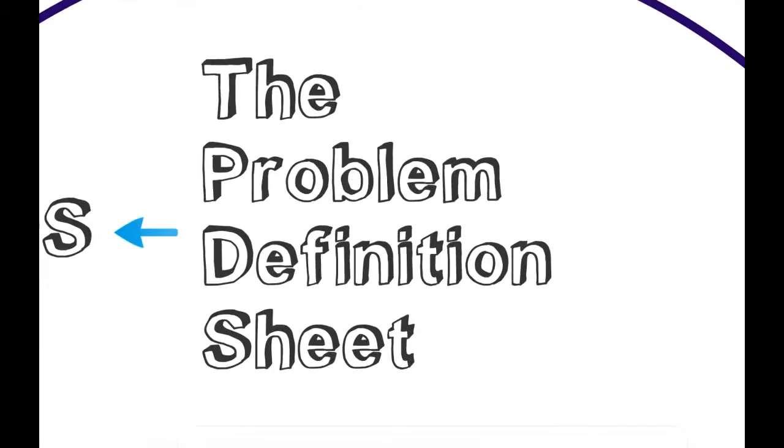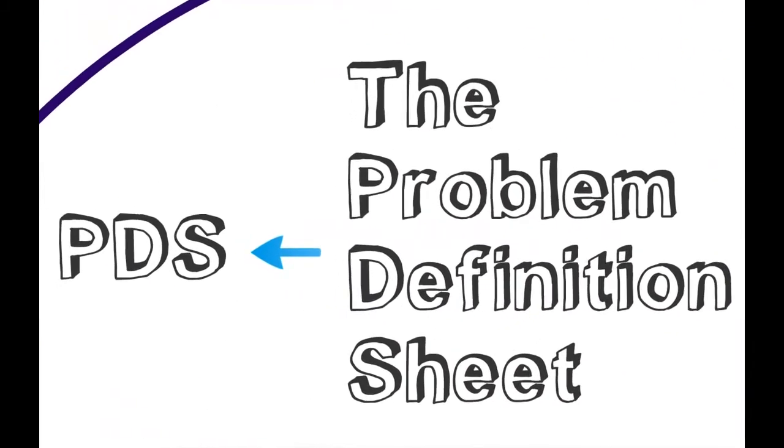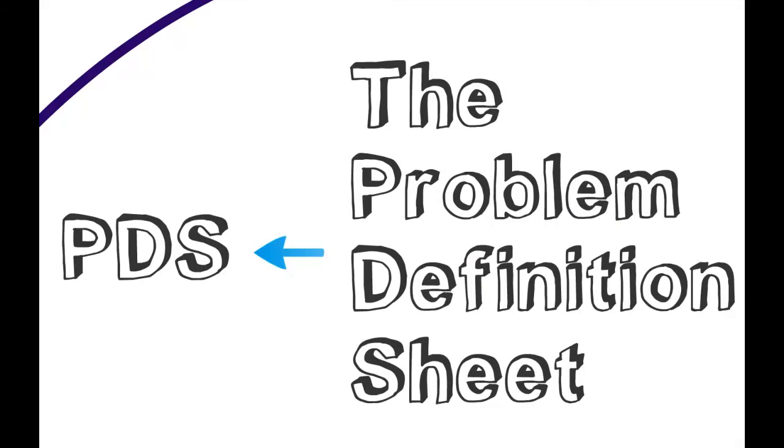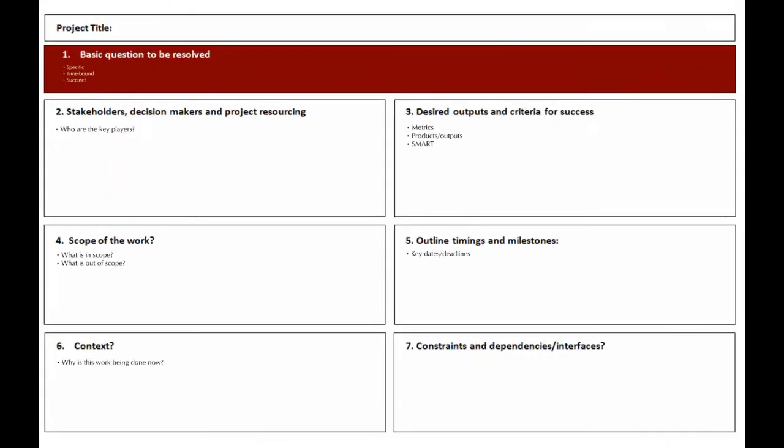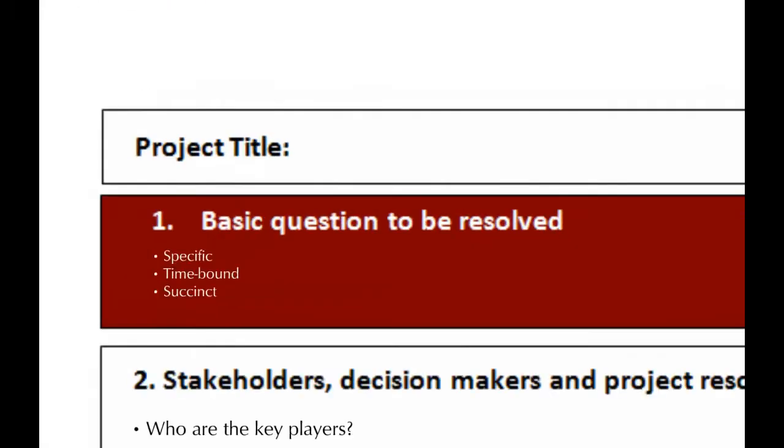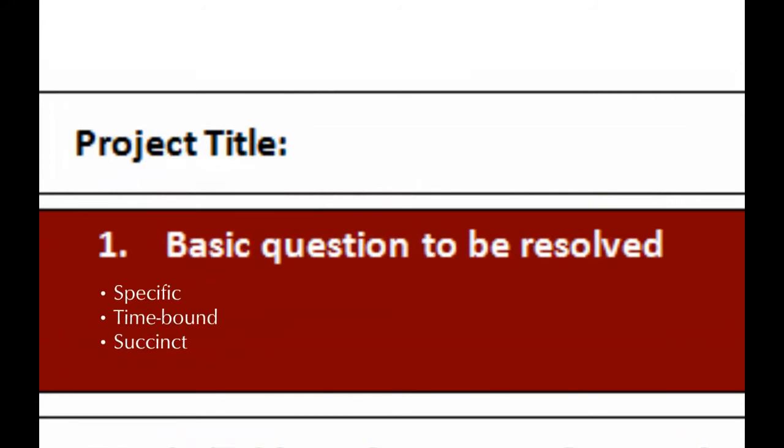The tool, the Problem Definition Sheet, often abbreviated to PDS, helps to overcome some of these problems. We'll take you through the basic elements of this now. This is what the sheet typically looks like. It starts off with a basic question that you're trying to resolve—a question that's specific, time bound, and succinct.